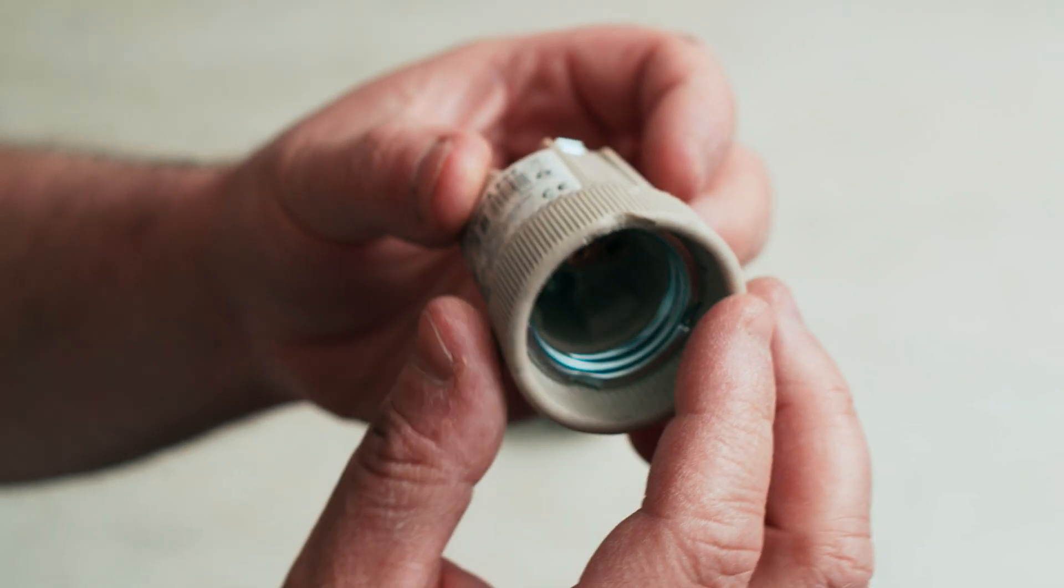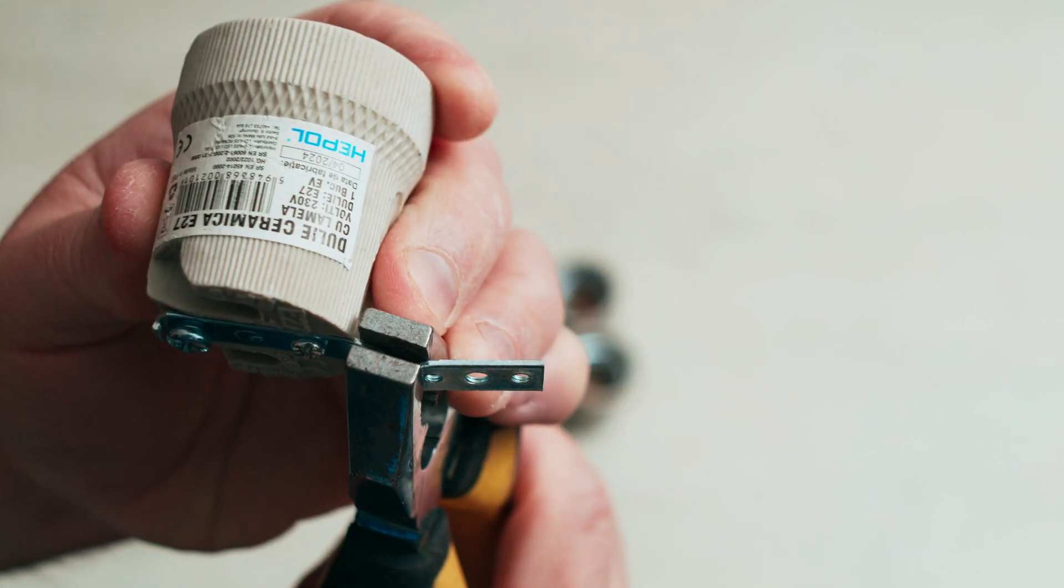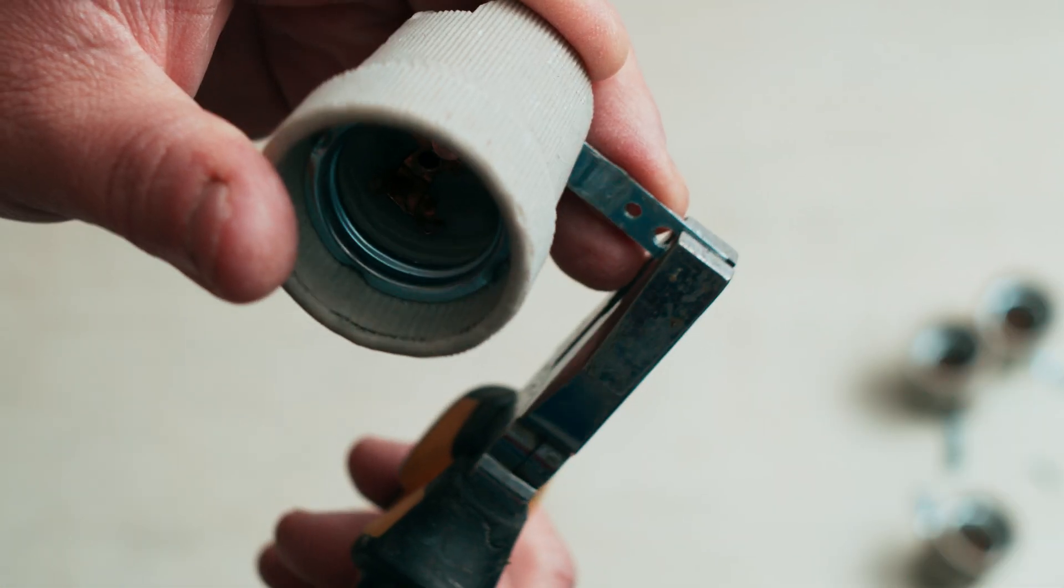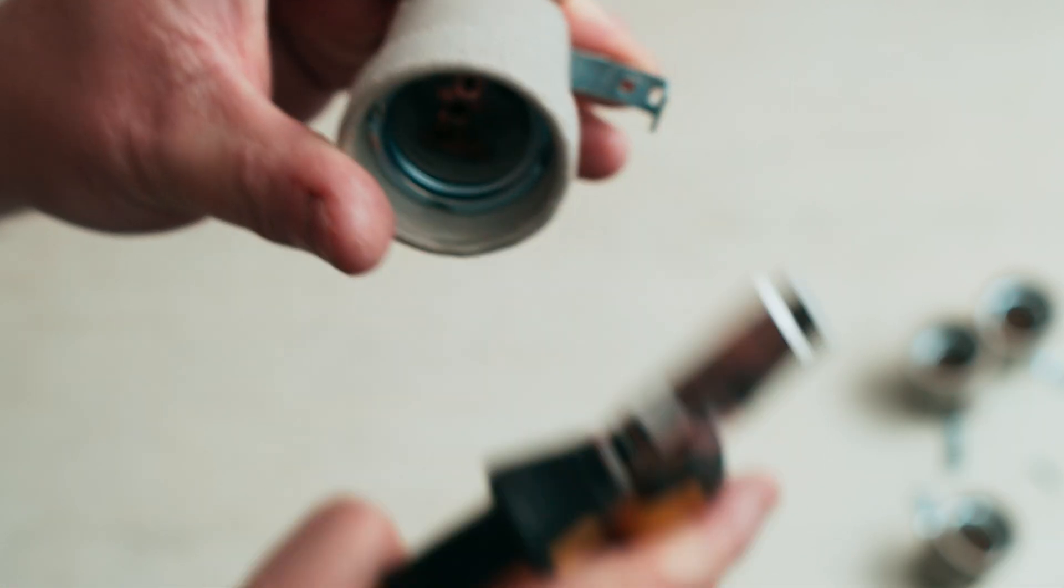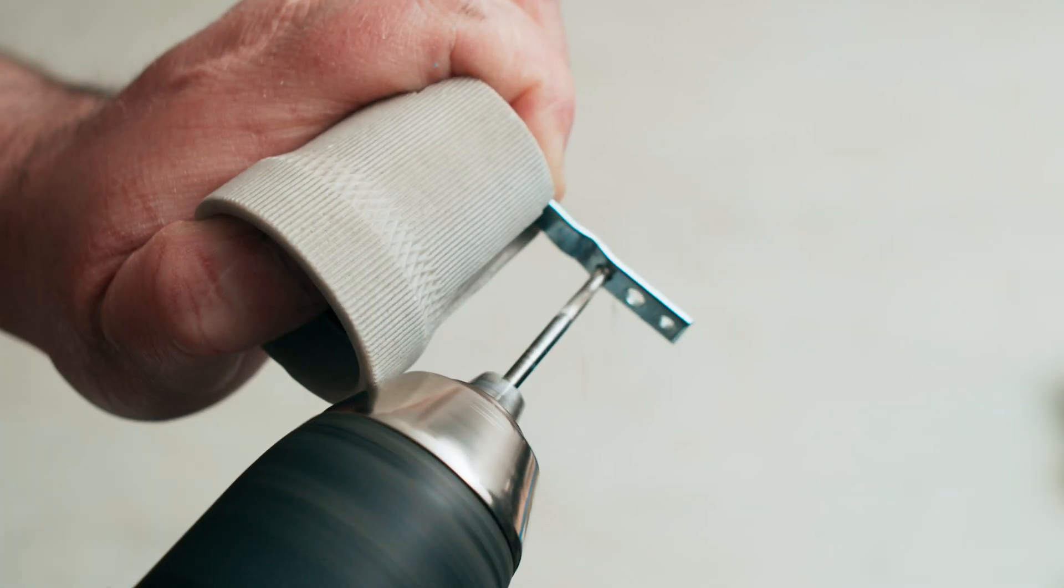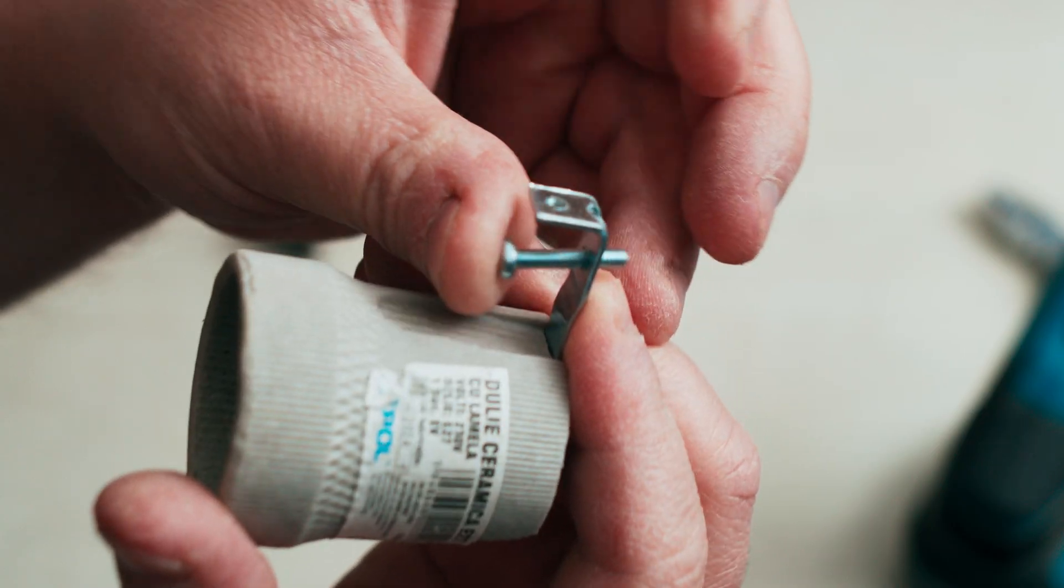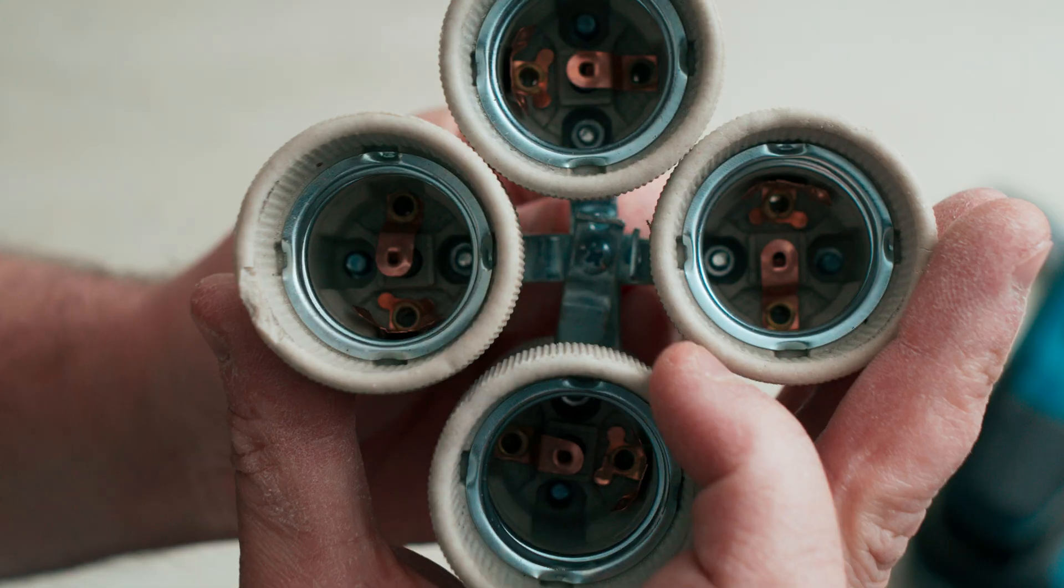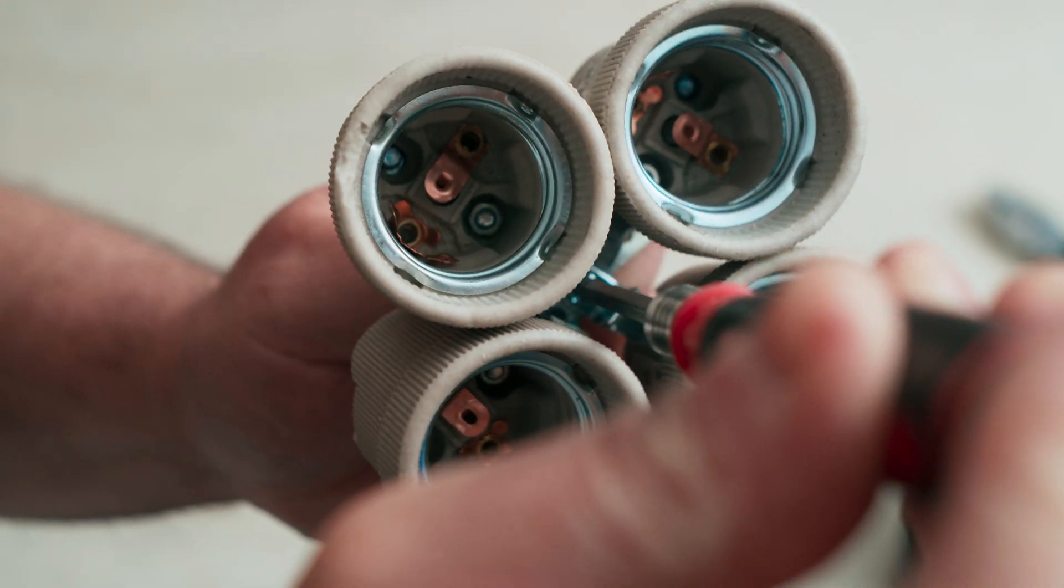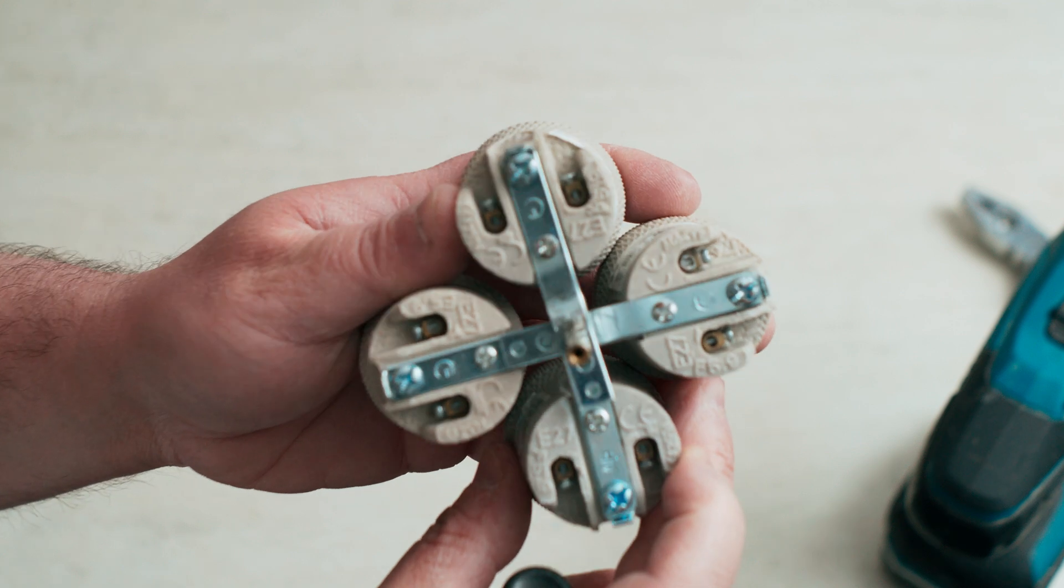This is a regular E27 ceramic bulb socket with a 90 degree bend tin plate. We first straighten all the plates. Then, bend back two of the plates at 90 degrees, but this time at the middle hole. Enlarge the first holes to 3 mm to fit an M3 screw. Attach all sockets together with the M3 screw and fasten it with a 3 cm long brass spacer.